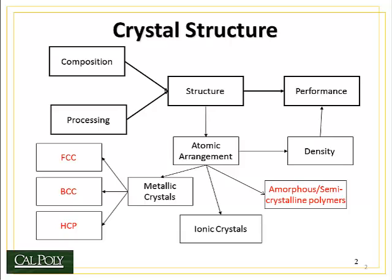Within the metallic crystals, we'll look at three primary crystal structures: FCC, BCC, and HCP. All of this together will help us understand how the density of a material is determined, which is a measure of its properties.